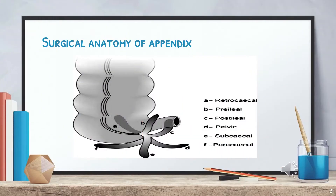Surgical anatomy of the appendix: it is located at the terminal end of the cecum where three taeniae coli join, about two centimeters below the ileocecal valve. Usually it is around five to ten centimeters in size, with a lumen diameter of one to three millimeters. The mesoappendix is an extension of the mesentery and contains the appendicular artery, which is a branch of the ileocolic artery. The most common position is retrocecal in approximately 75% of individuals; the next most common is pelvic.